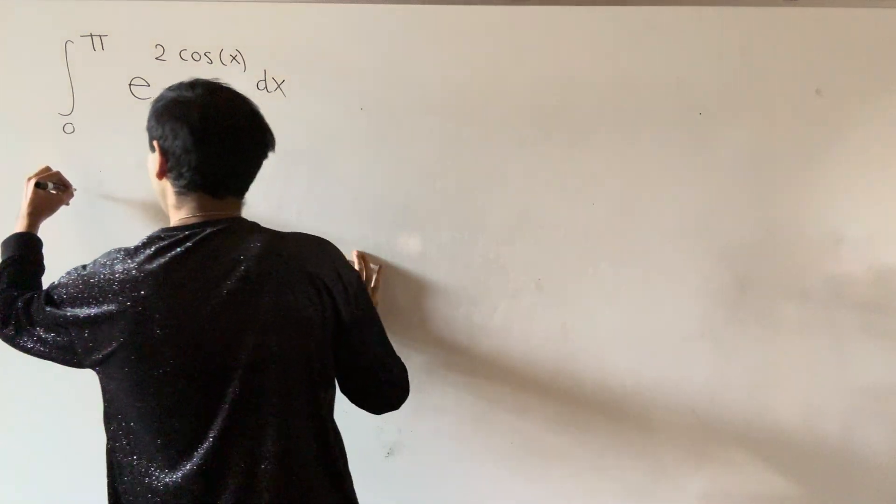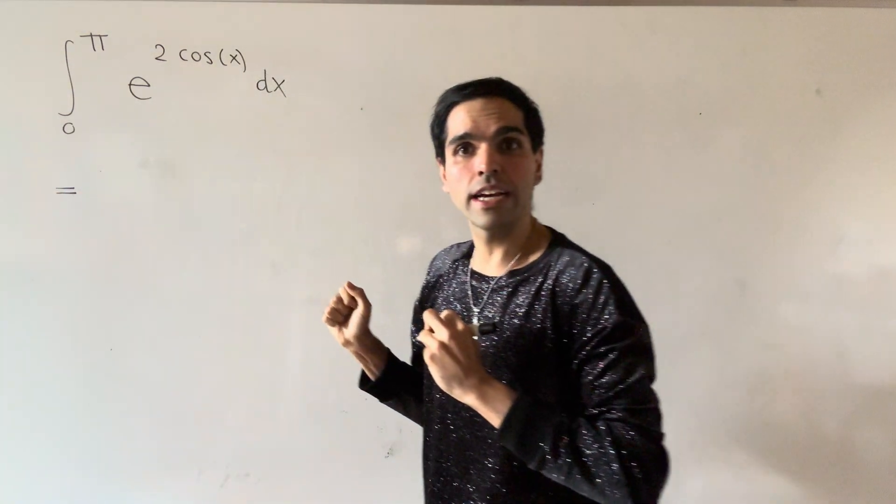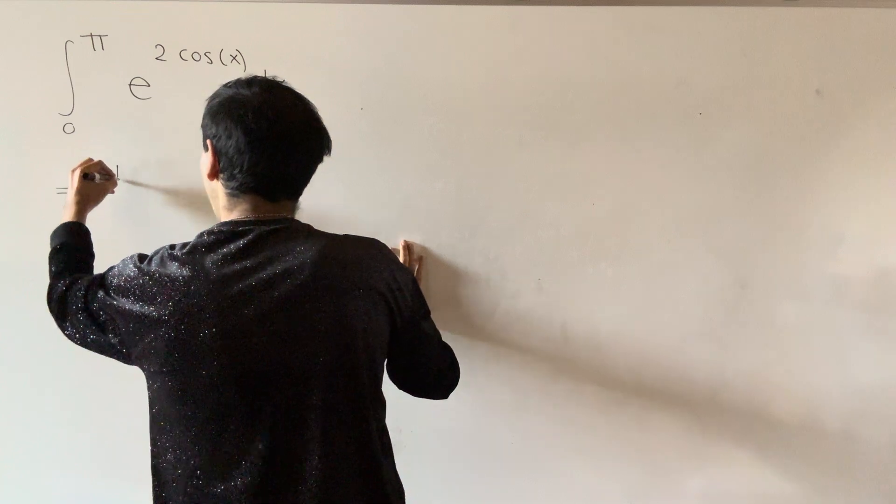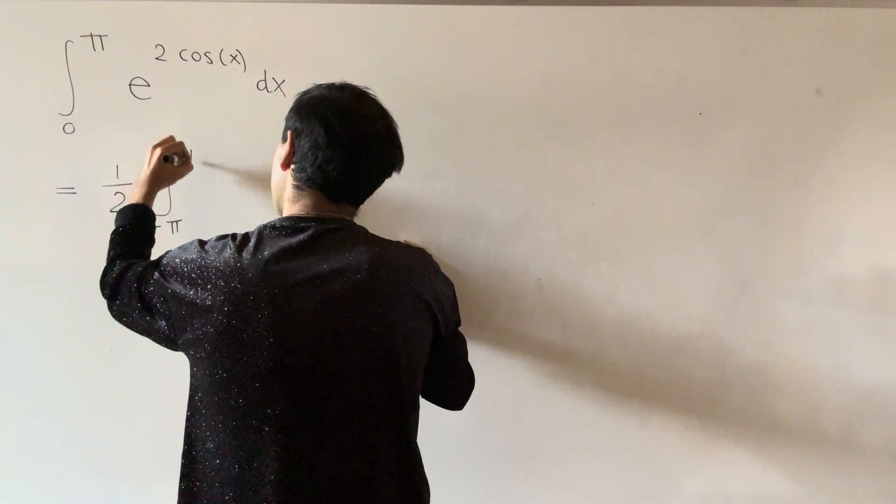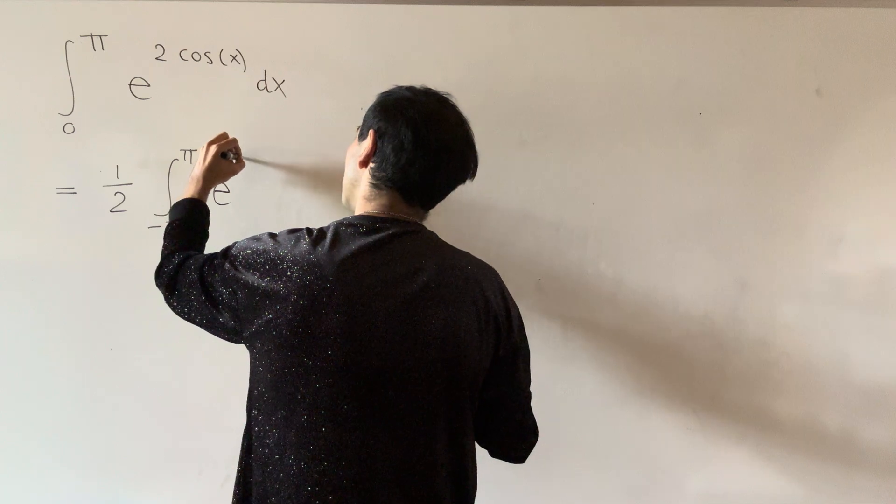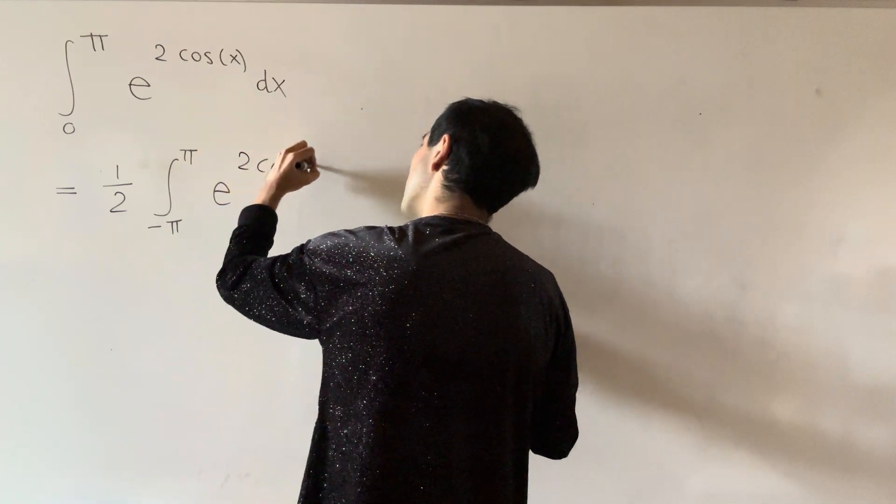And first of all, let's use the fact that cosine is even to turn this into one half of the integral from minus pi to pi of e of two cosine of x, yes?